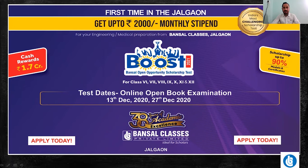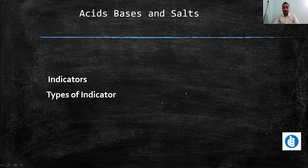Hello students, myself Naresh Mata, chemistry faculty at the Bansar class. Today we are discussing about the topic indicators in the acid-base chapter. We are discussing what indicators are, what types they are, and what role they play.